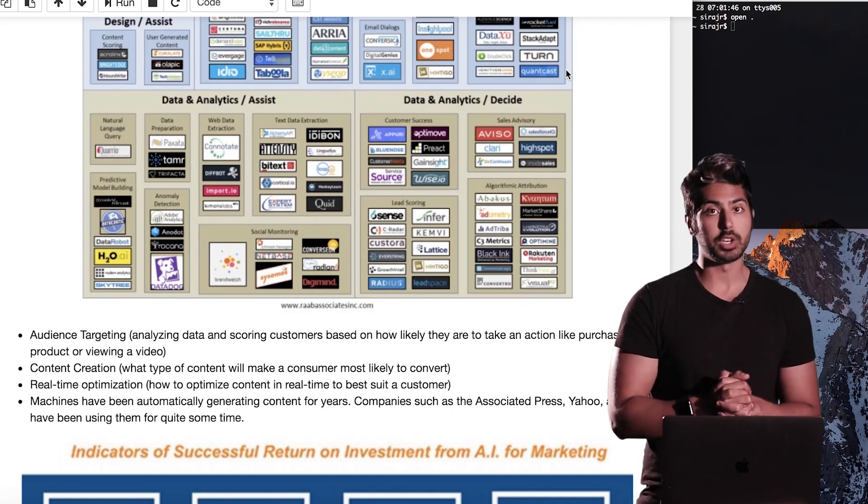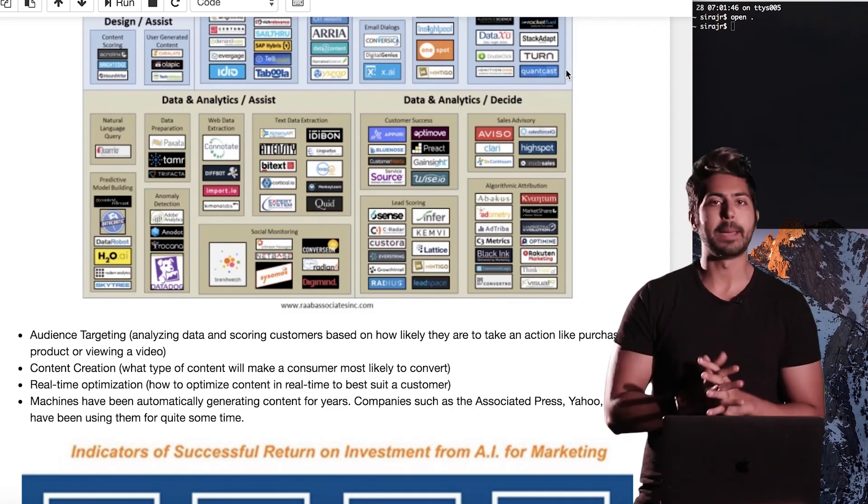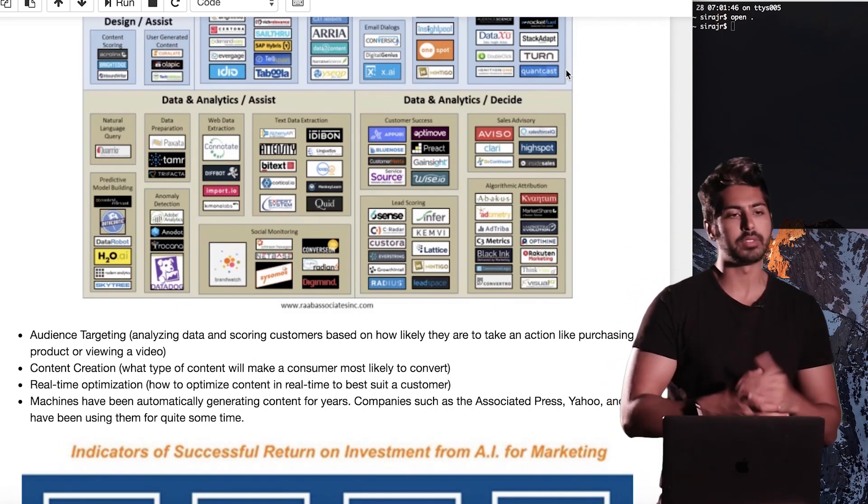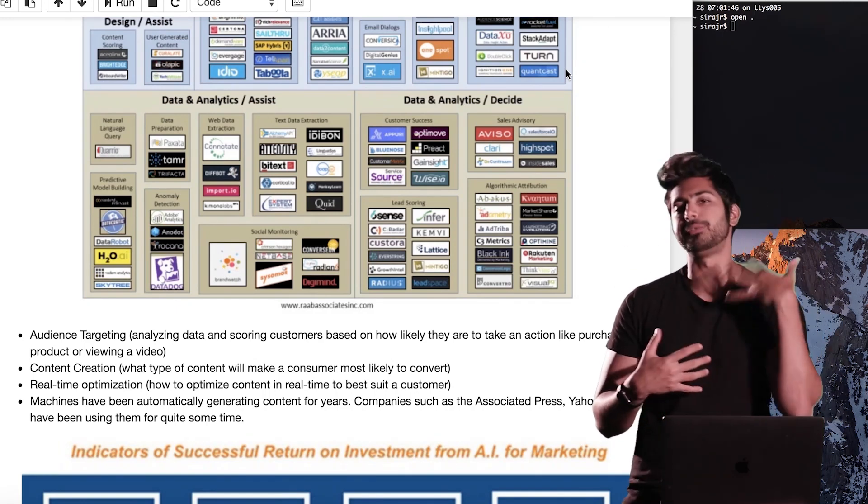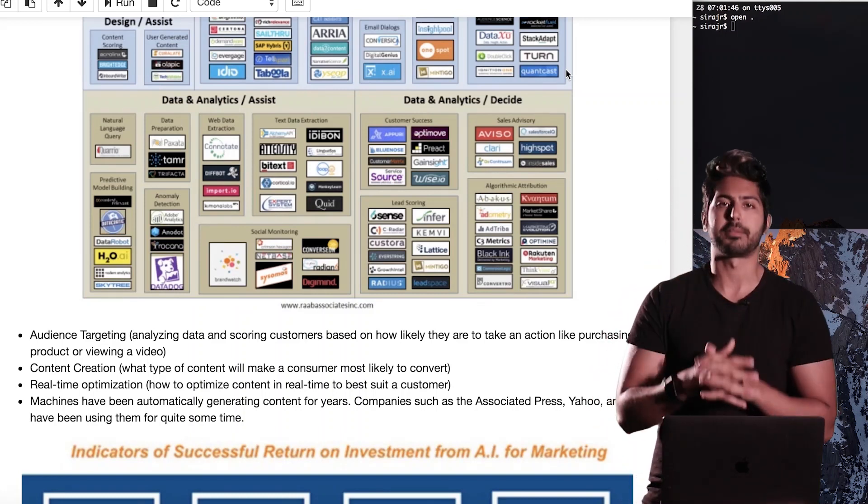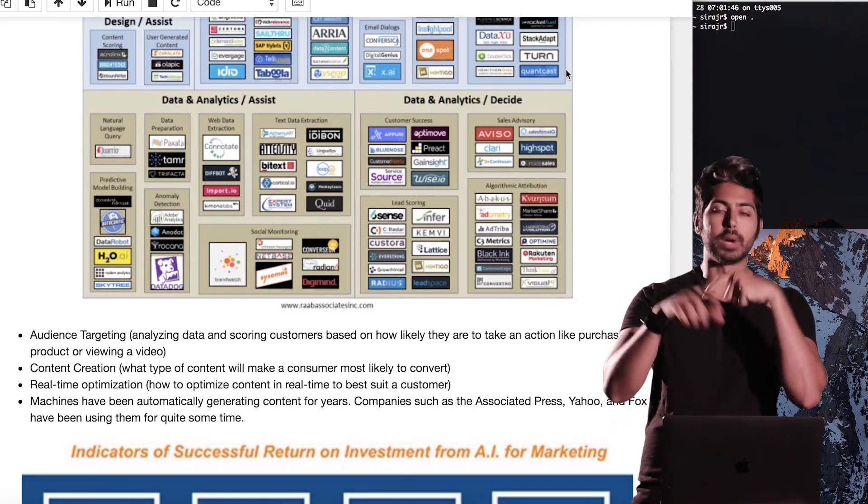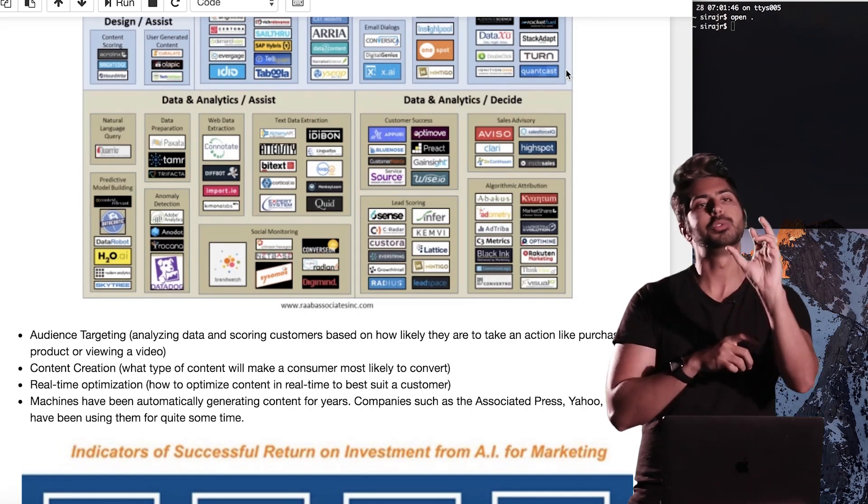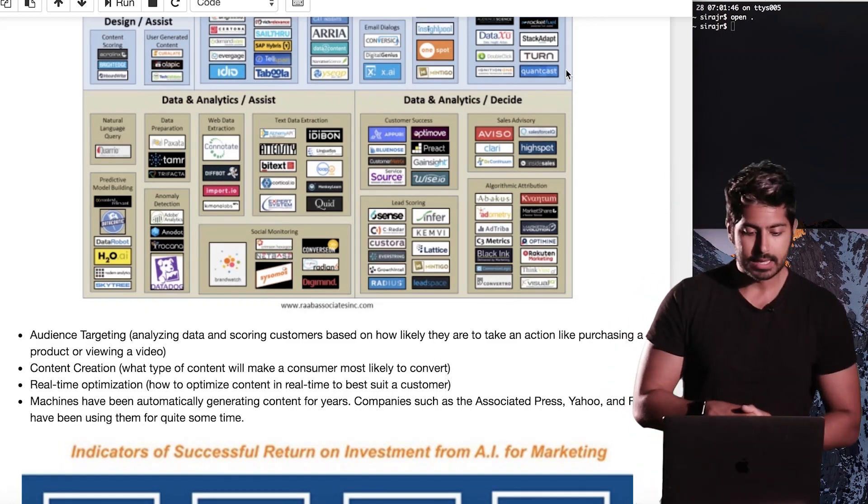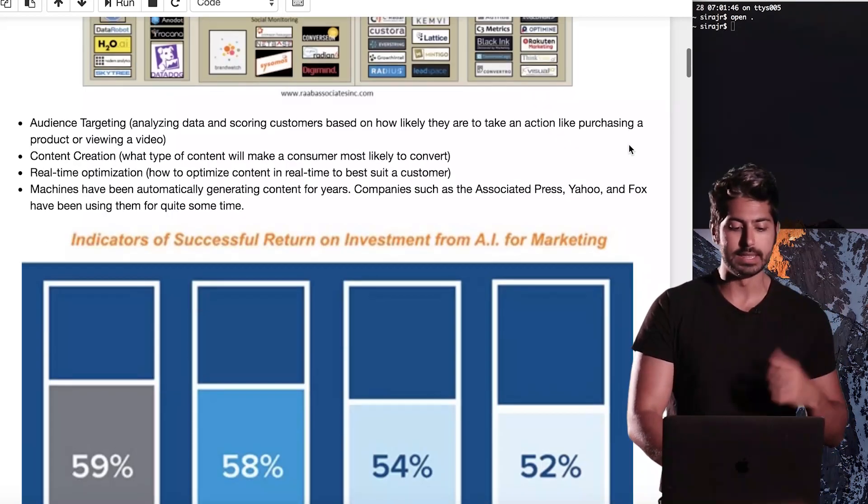Now, real-time optimization is another strategy using AI. Let's say you have some marketing campaign. Let's say it's an email campaign. And you're constantly sending ads out to your users to see how they feel about the product. And you're getting feedback from them, whether they like it or not. How do you optimize that content in real time so that you're learning from what your users like and what they don't like? And this has been happening for a very long time.